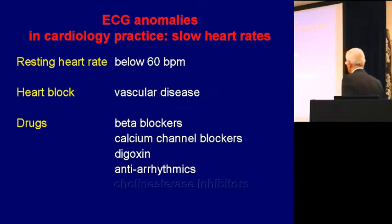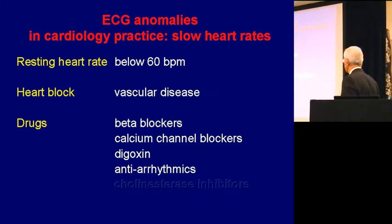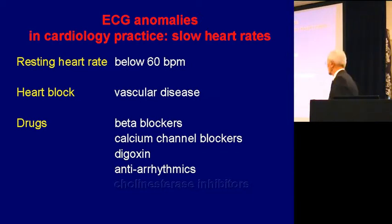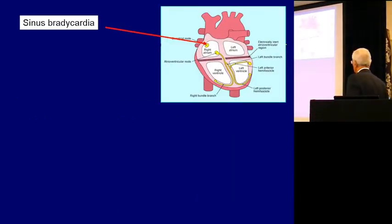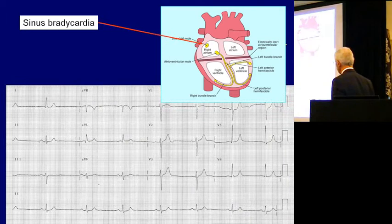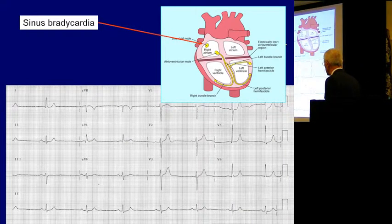Heart rate can also be affected by some of the things used on a daily basis. Beta blockers and calcium channel blockers are frequently used to treat angina, hypertension, and also after a heart attack. Digoxin we use less these days, but it's a quiet cause of a slow heart rate. And some of the antiarrhythmics that I use can be quite potent too. So sinus bradycardia — the signal in the sinus node is told to slow down for whatever reason — and it looks like this.